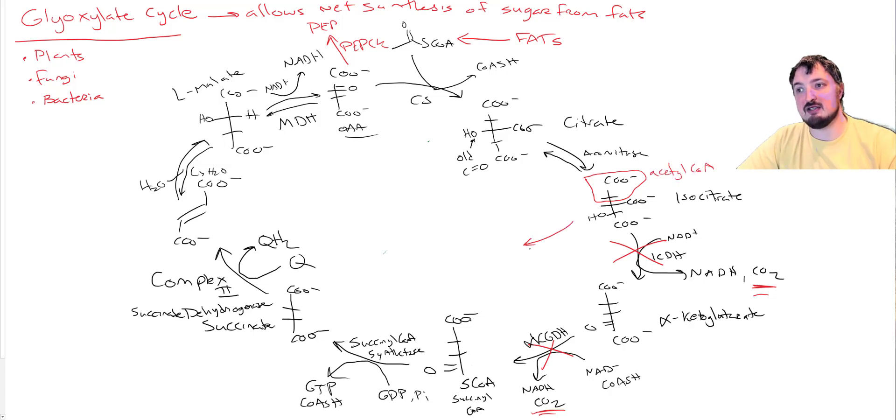We're going to do something called isocitrate lyase. Isocitrate lyase is an important enzyme. Remember, a lyase is something that breaks a molecule down without using water. It's the opposite of a hydrolase. The hydrolase uses water. A lyase doesn't use water. Isocitrate lyase is going to essentially pull off this hydrogen to make a double bond and then kick off a succinate. It's also going to break off this bottom two carbons as a molecule called glyoxylate.